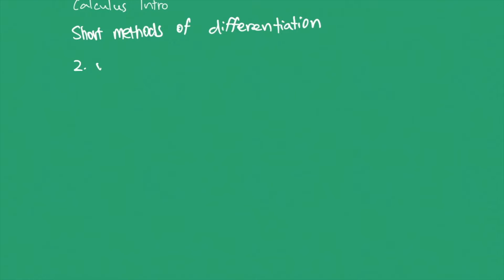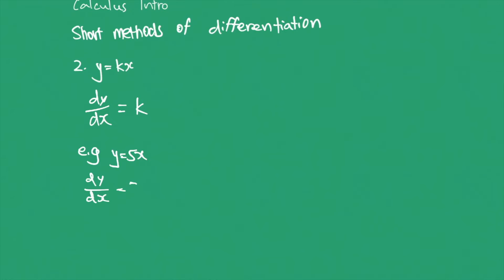The next one is a linear function: y equals kx, where k is a constant. The derivative of a linear function is the gradient, which is k. For example, if y equals 5x, the derivative function is just 5, because a linear function is a straight line with a constant gradient throughout the line. That's why the derivative of a linear function is its gradient — it doesn't change.